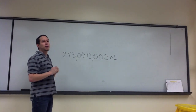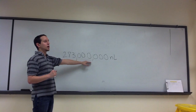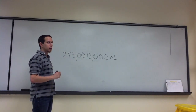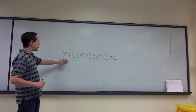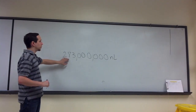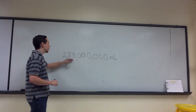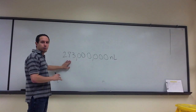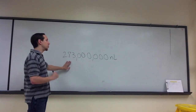Scientific notation is about simplifying the number while still maintaining the integrity of that number. In other words, I want to always know that I have 283 million. I don't want this to turn into 200 million or 300 million — I want to know that it's 283 million.